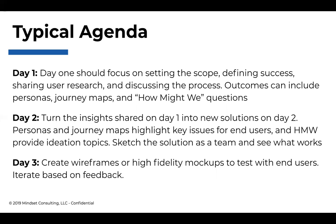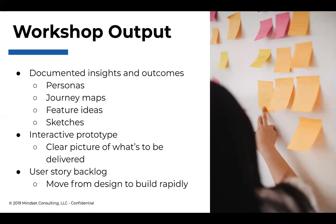Also confirm whether the solution is technically feasible and financially viable. Outputs from the workshop include documented insights and outcomes — you might have personas, journey maps, sketches. You definitely want an interactive prototype giving everyone a clear idea of what's going to be delivered. Then typically you create a user story backlog to transition quickly from design to development, understanding what the highest priority features are, how to start building, and continuing to collect feedback as you go.